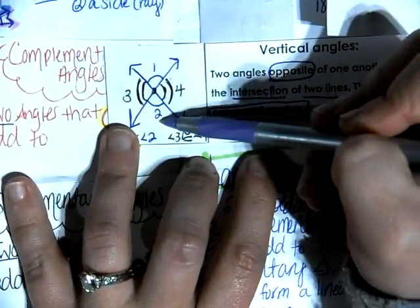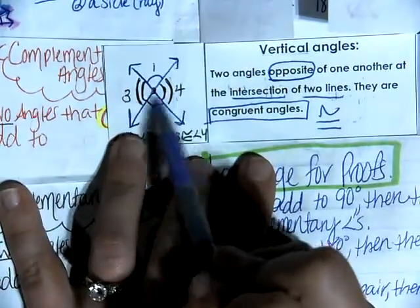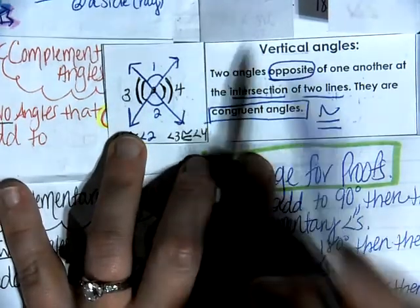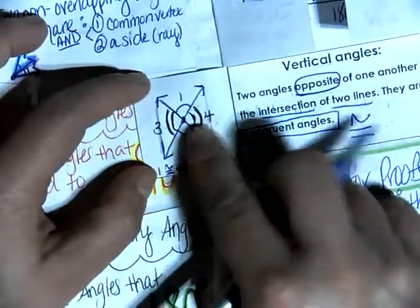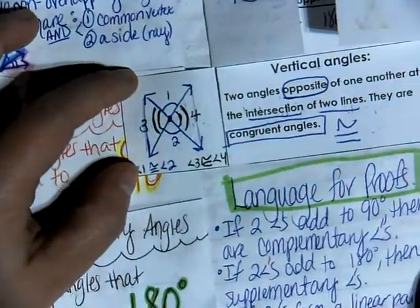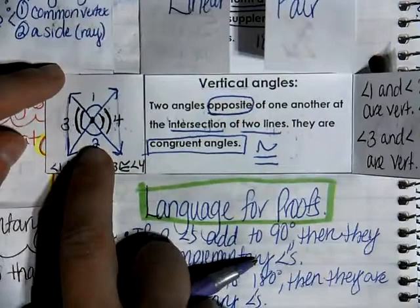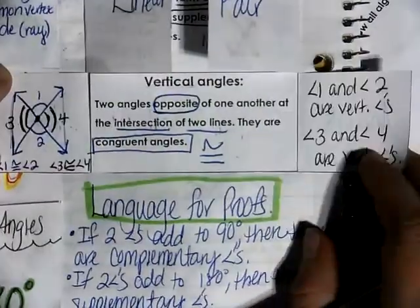They are considered vertical angles. But be careful — this is where it gets really tricky. Angle three and four are also considered vertical angles even though they're written horizontally. Technically, we could flip our picture to its side and now we have vertical angles. So if the angles could form what we call a bow tie, those angles are considered vertical angles as well. And all vertical angles are congruent. So angle one is congruent to angle two, and angle three is congruent to angle four.